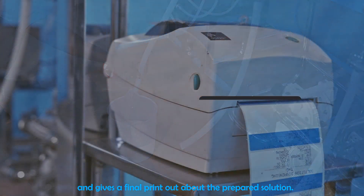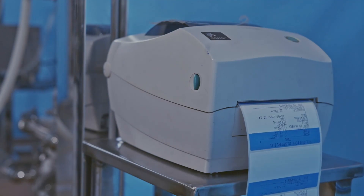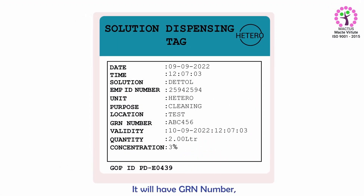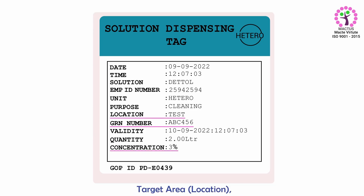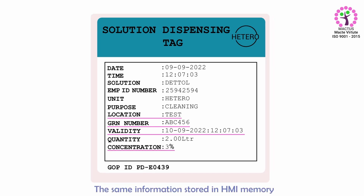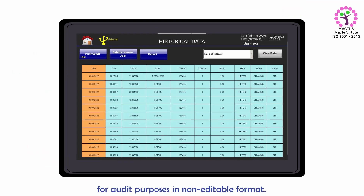The Automatic Solution Dispensing System gives a final printout about the prepared solution. It will have the GRN number, concentration, target area, validity, and associated information. The same information is stored in HMI memory for audit purposes in a non-editable format.